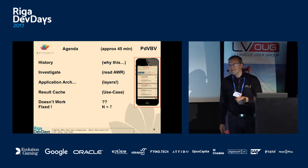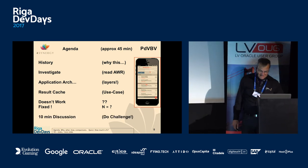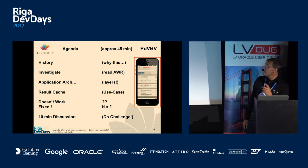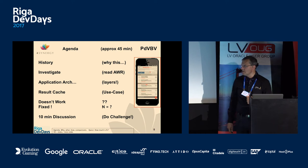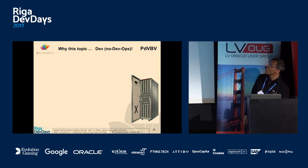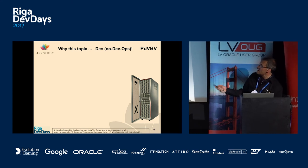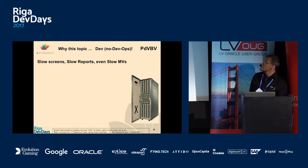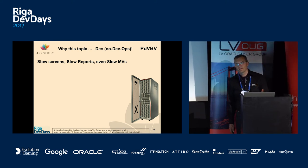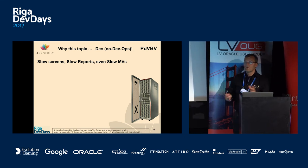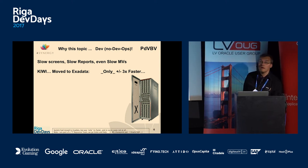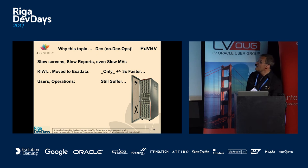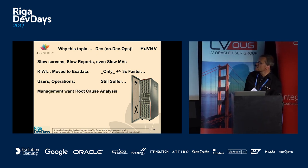A couple of months ago, one person in the audience actually opened a service request with Oracle to find out that number. We had an application running on Exadata and it wasn't good enough — slow screens, slow everything, even slow materialized views. Materialized views are the magic bullet in Oracle; you can pre-query stuff, but even that didn't help. We tried throwing more hardware at it — it didn't work.